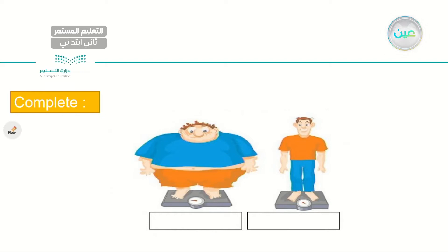Now I need you to complete with the correct answer. Describe each man based on the picture using the correct adjective — you have to use opposite adjectives. Shall we use tall and short? Big and small? The answer is: the man to your left is fat, while the man to your right is thin. Fat, thin. Very good, my dear student.